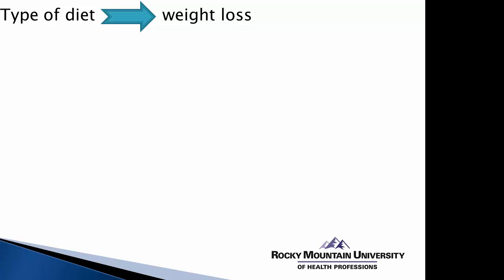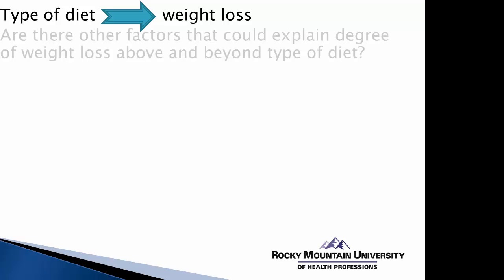The assumption is that the type of diet, and only the type of diet, will directly affect the amount of weight loss. But we know in many cases with human subjects, especially in experimental research, there might be other outside factors that could affect the level of weight loss above and beyond the type of diet the person is undergoing or the type of treatment they're receiving.